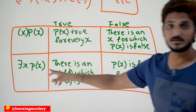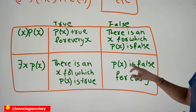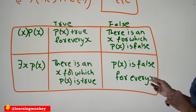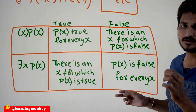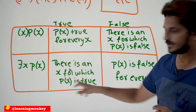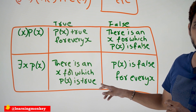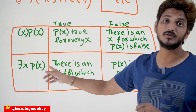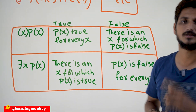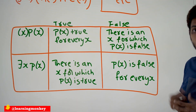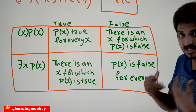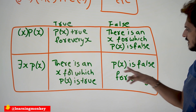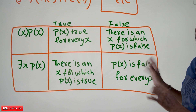Similarly, existential quantifier is going to be true when there is an x for which P(x) is true — you have to show that at least for one x, P(x) is going to be true. Then only we can say there exists an x such that P(x) is true. When there exists P(x) is going to be false — if P(x) is false for every x, if you did not find any single x for which P(x) is true, then you can say there exists P(x) is going to be false.